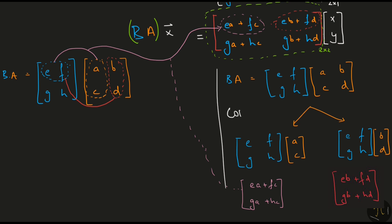Apart from this column picture, there is a row picture as well. The third way of looking at matrix matrix multiplication. But I think for now this is more than enough.